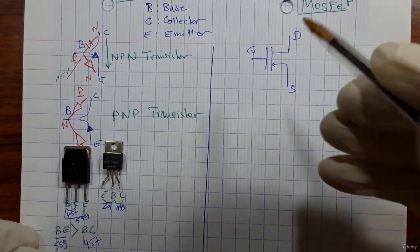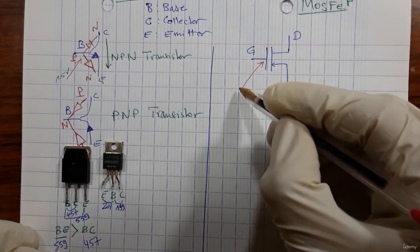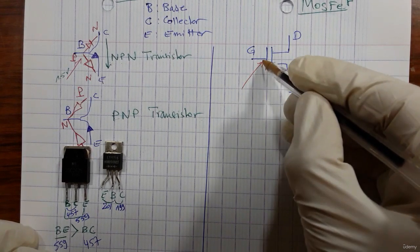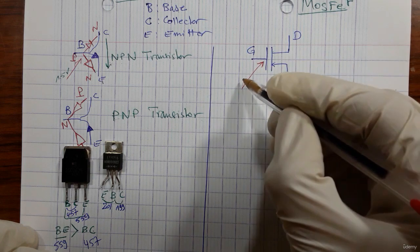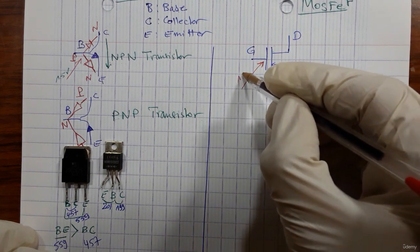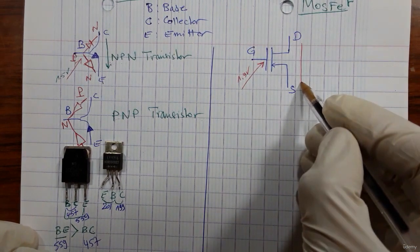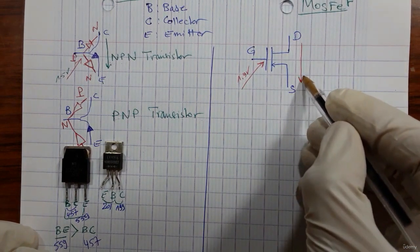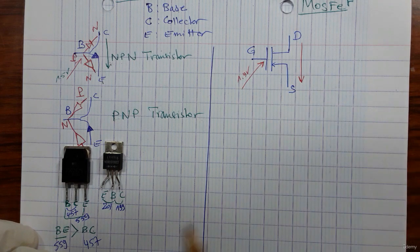The working principle is similar — the MOSFET receives a voltage at the gate, which is the control signal. For example, if it receives 1.9 volts, current will flow from drain to source.